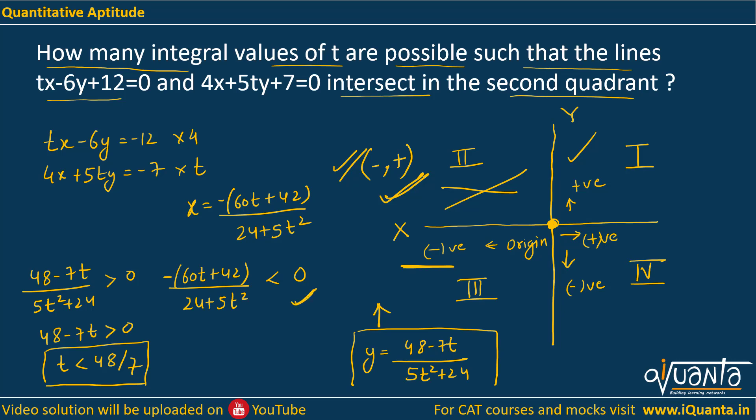If I multiply this whole equation by negative, the inequality sign is reversed. So I will be getting 60t+42 greater than 0. This denominator will become 0 only. So I can say that t must be greater than -7/10.